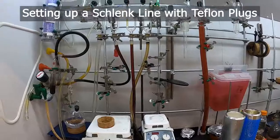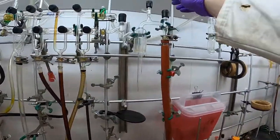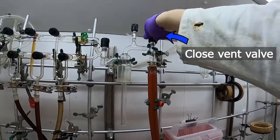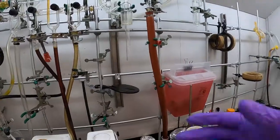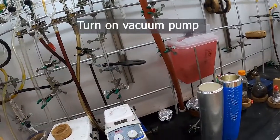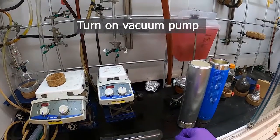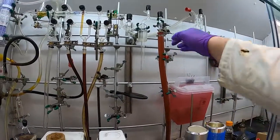To set up a Teflon valve style Schlenk line, the first thing we need to do is close the vacuum side of our line here so that our vacuum is isolated, and then turn on the vacuum. It will gurgle for a minute, but that should go away pretty quickly as the air is evacuated from the hose here and a little bit of headspace in the glass.